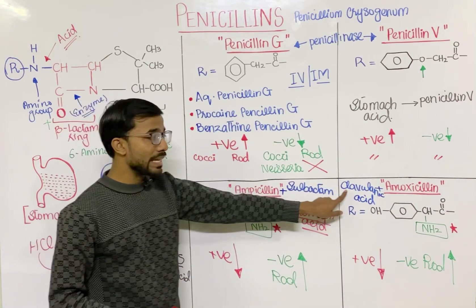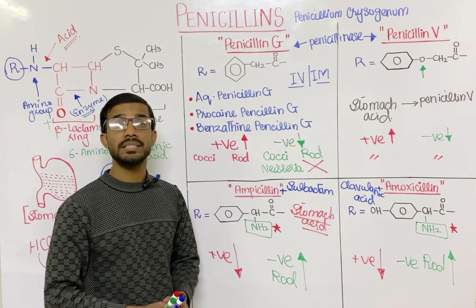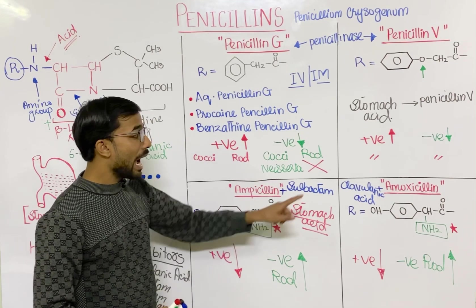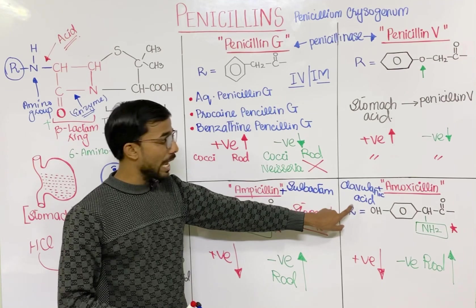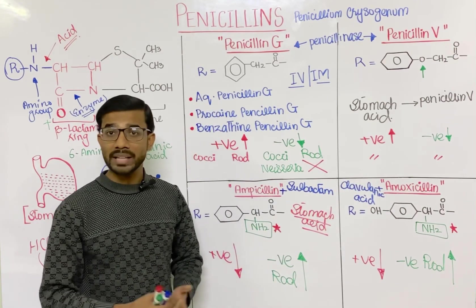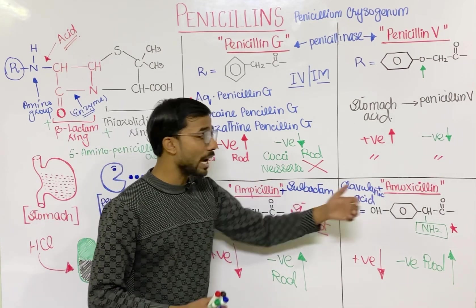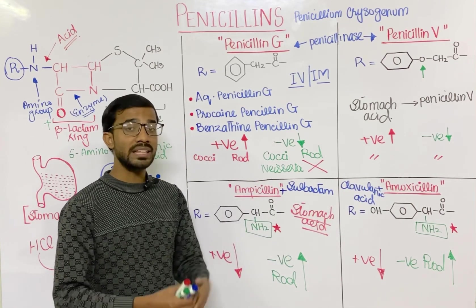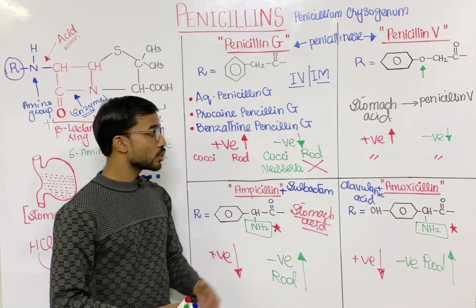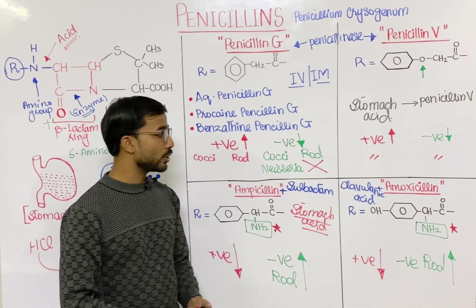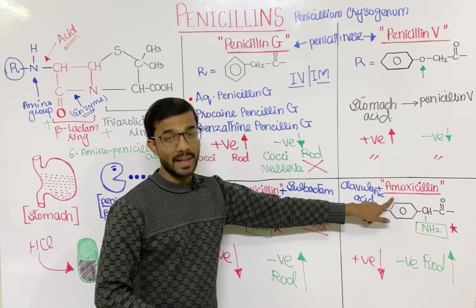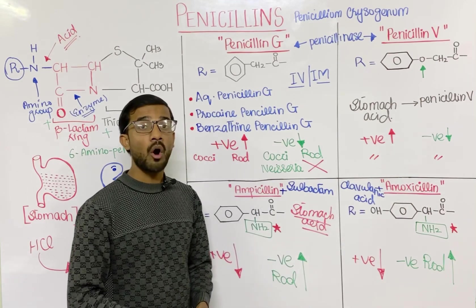Clavulanic acid inhibits the enzyme penicillinase or beta-lactamase. After inhibition, amoxicillin can easily do its work. Otherwise, the enzyme can destroy amoxicillin, and when there is no amoxicillin, there is no antimicrobial action. Generally, in the market, you can get clavulanic acid combined with amoxicillin — the brand name is Augmentin.